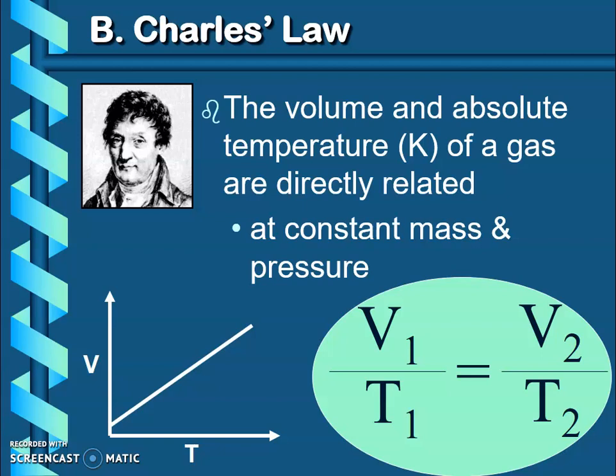Be careful when you're working on these problems and make sure that you always convert those Celsius temperatures to Kelvin before you start calculating, or you will get the wrong answer. Here is our equation for Charles's law: V1 over T1 equals V2 over T2.